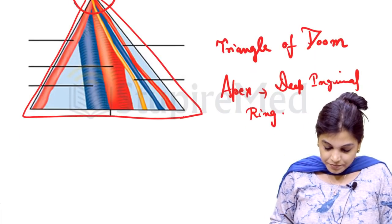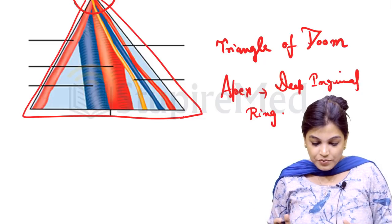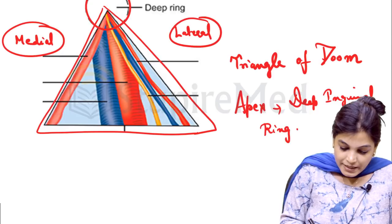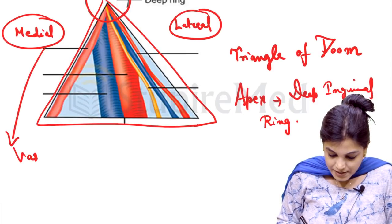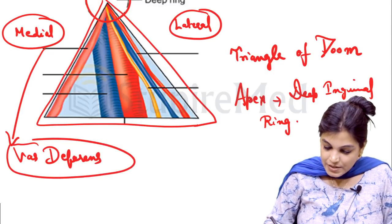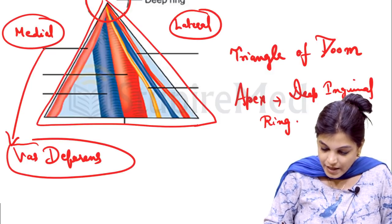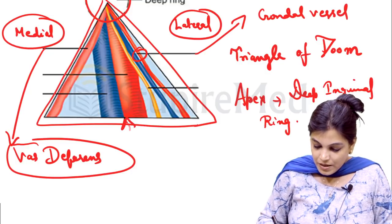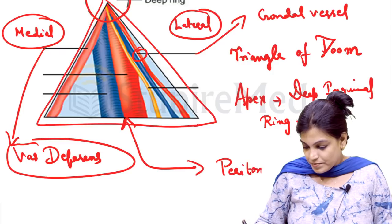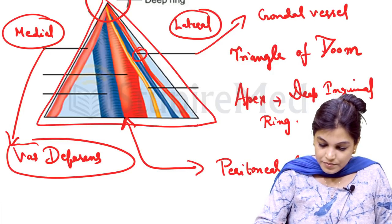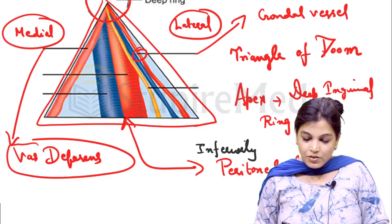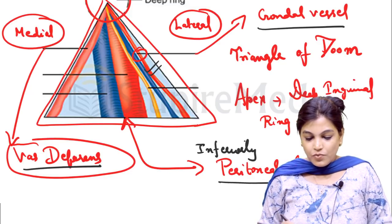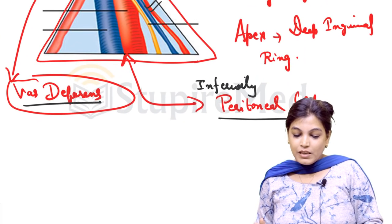The triangle of doom has medial, lateral, and inferior boundaries. The medial boundary is formed by the vas deferens. Laterally it is formed by the gonadal vessels. Inferiorly there is the peritoneal fold. The apex is at the level of the deep inguinal ring.